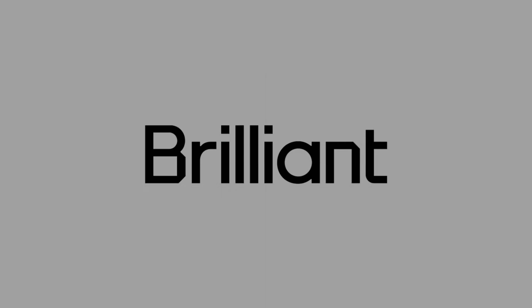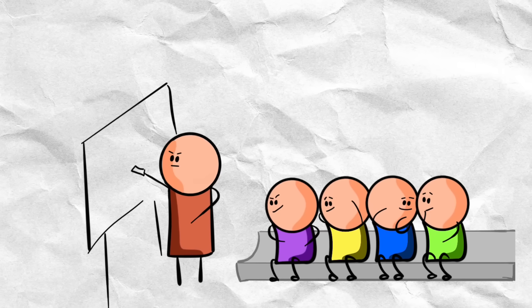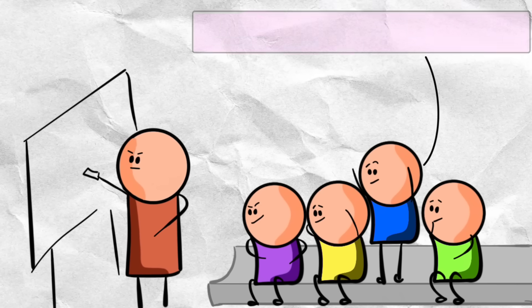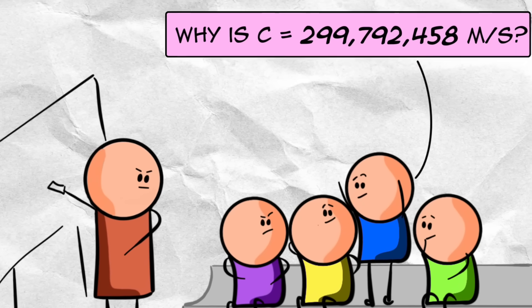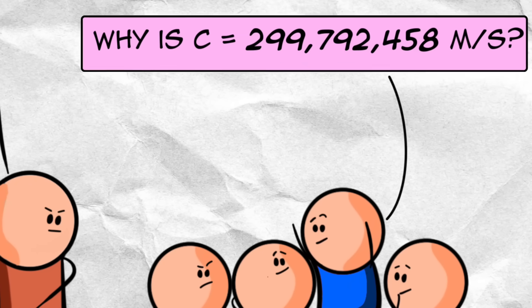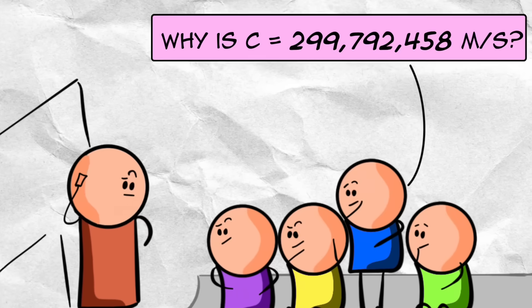Thank you, Brilliant, for sponsoring this video. A few years ago, while I was still teaching in the classroom, one of my students asked me this question: Why is the speed of light in vacuum this particular number, 299,792,458 meters per second?